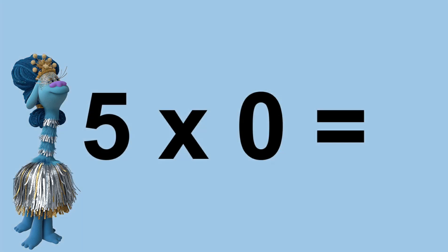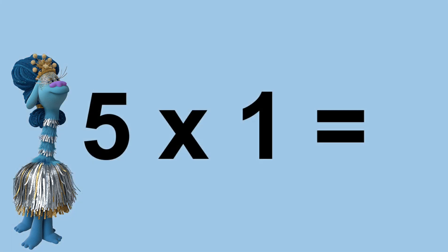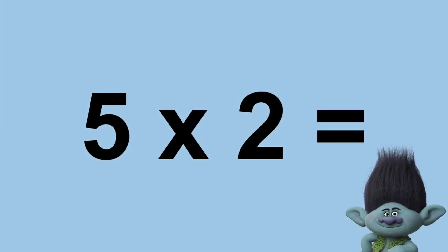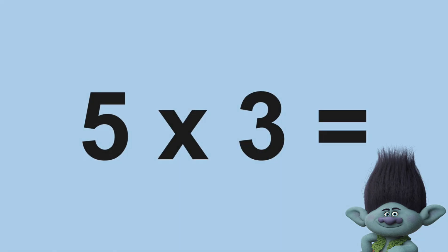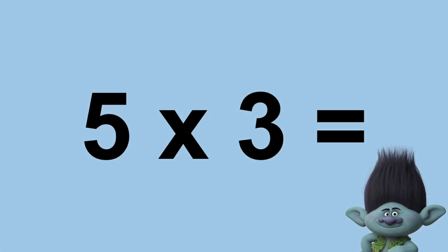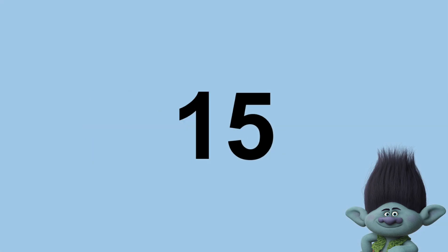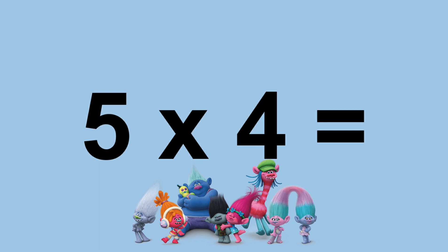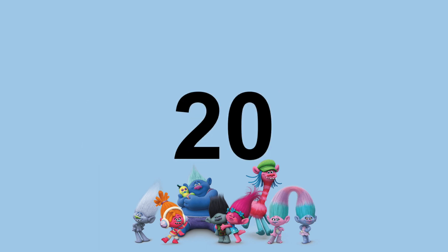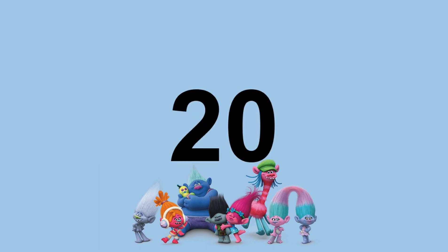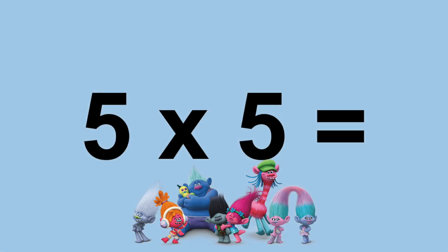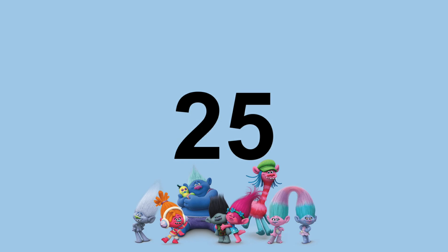Five times zero equals zero. Five times one equals five. Five times two equals ten. Five times three equals fifteen. Five times four equals twenty. Five times five equals twenty-five.